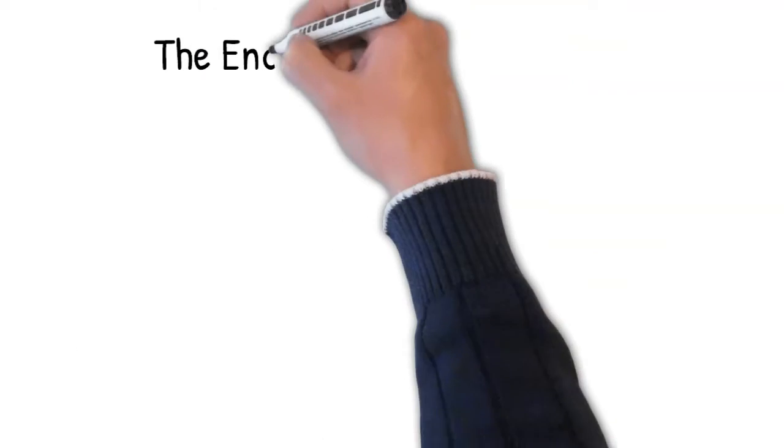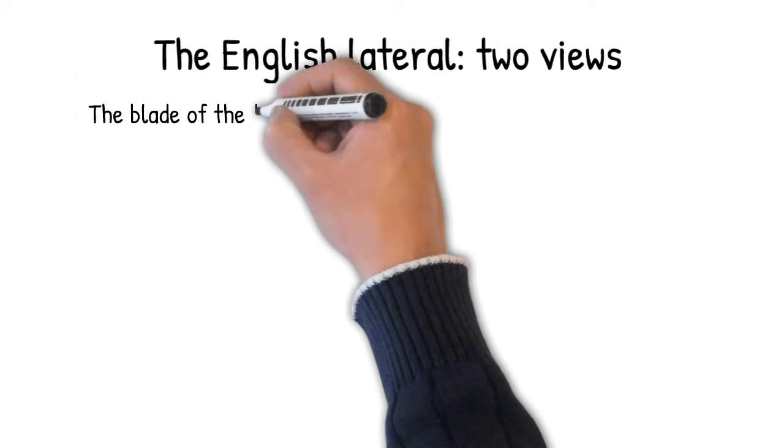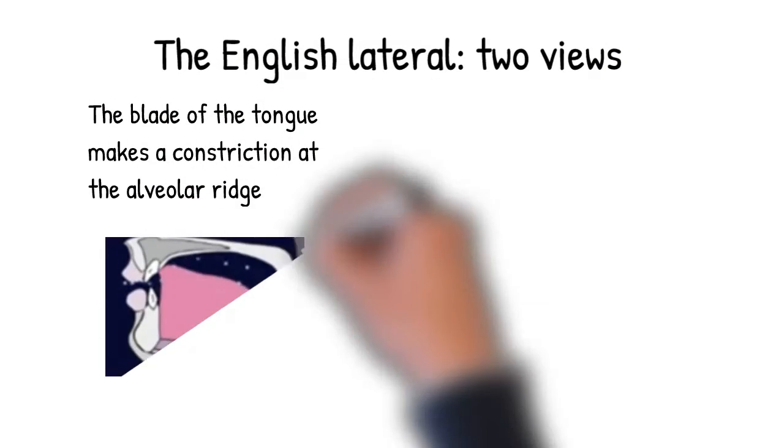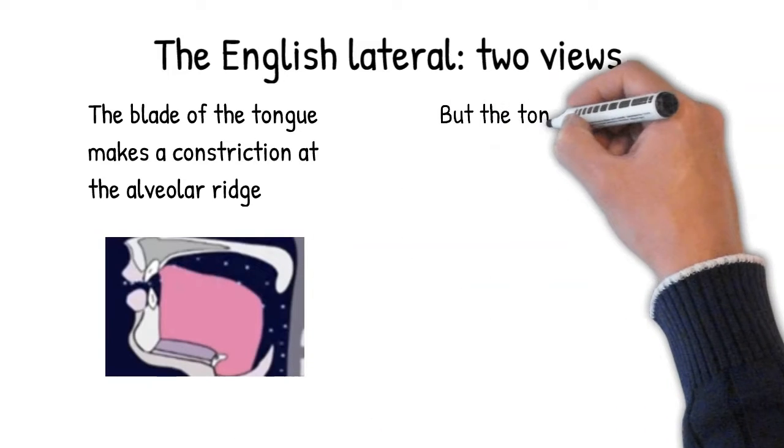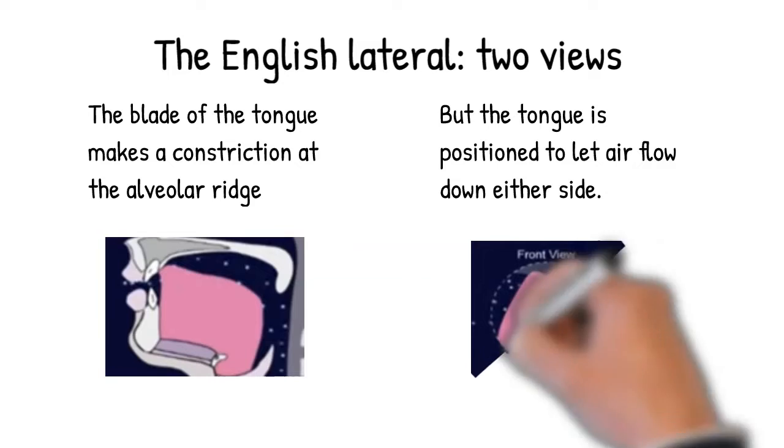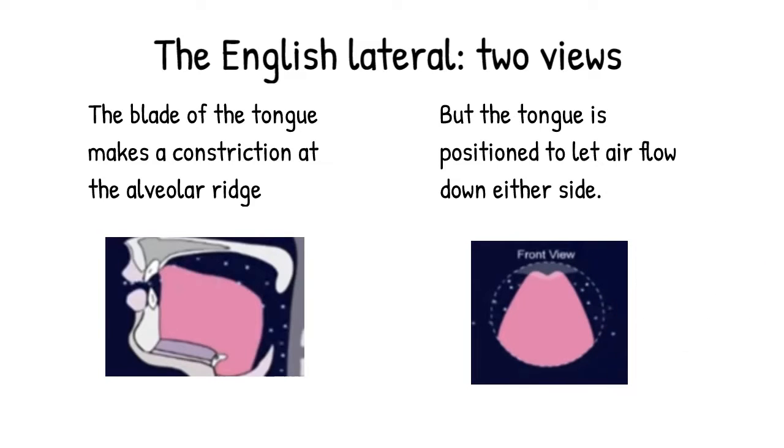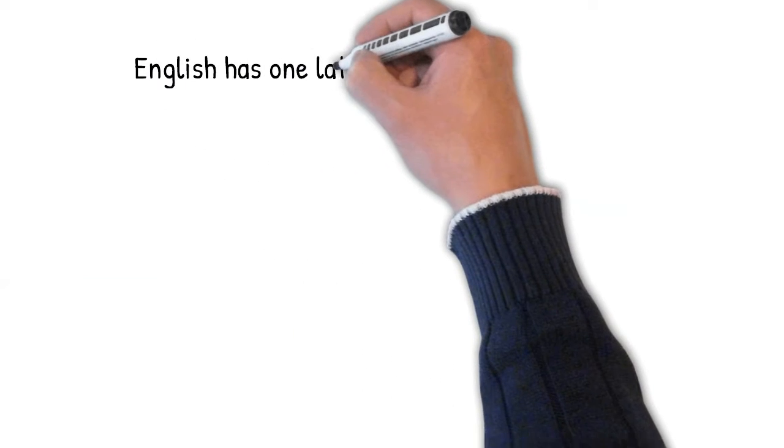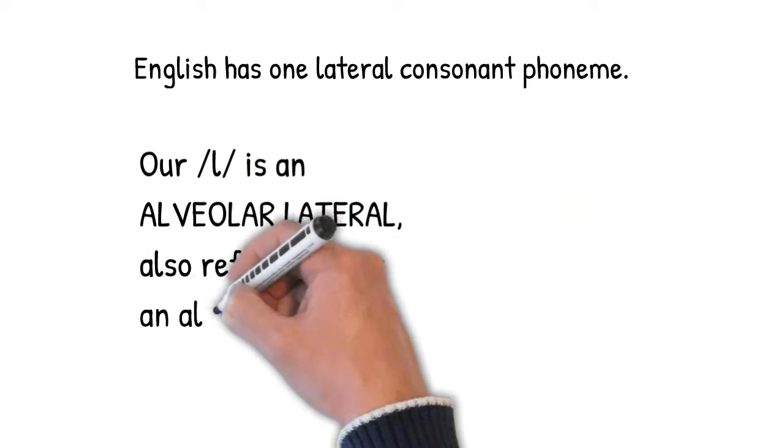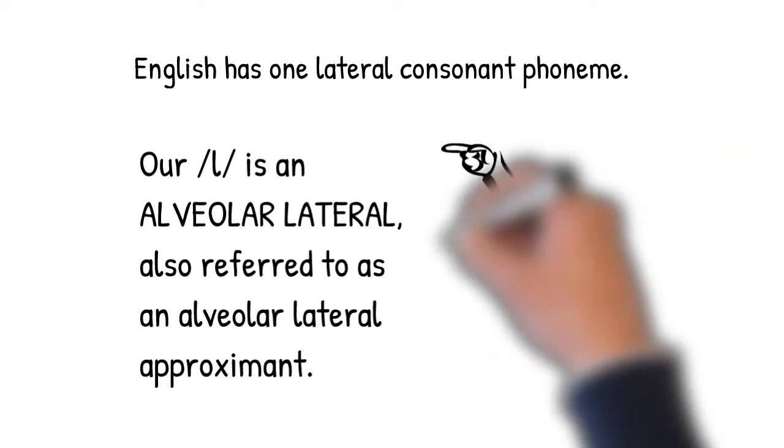Here's a look at the lateral consonant in English. We make a constriction with the tongue blade at the alveolar ridge, but as we can see in the front view, we position the tongue in order to allow air to flow down either side. English has one lateral phoneme, L. It's an alveolar lateral that we sometimes also call an alveolar lateral approximant.